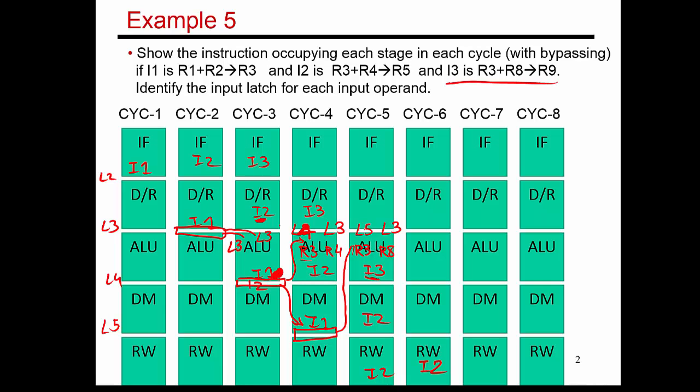Once I3 has got those inputs, it computes the result and advances through the data memory stage and finishes. So with bypassing or forwarding, these three back-to-back-to-back instructions finished in back-to-back-to-back cycles, with no stall cycles between them.